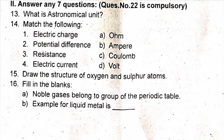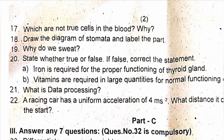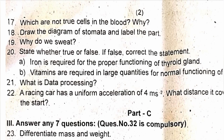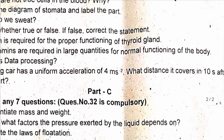Question 17: Which are not true cells in the blood? Why? Question 18: Draw the diagram of stomata and label the parts. Question 19: Why do we sweat? Question 20: State whether true or false; if false, correct the statement. A) Iron is required for the proper functioning of the thyroid gland. B) Vitamins are required in large quantities for normal functioning of the body.